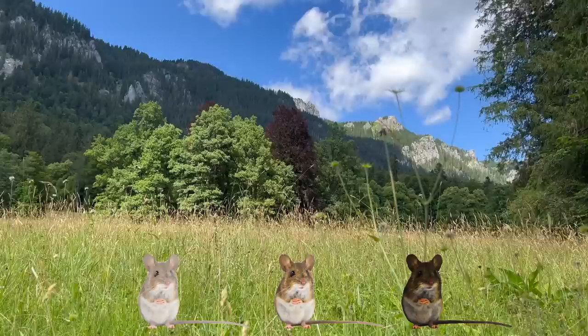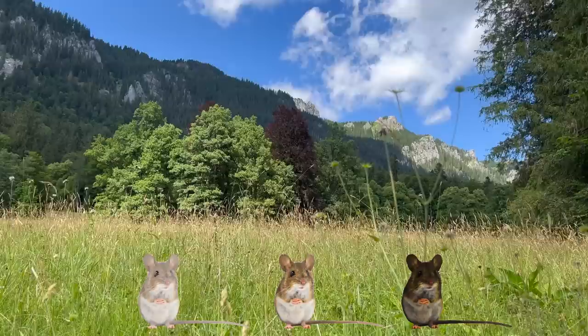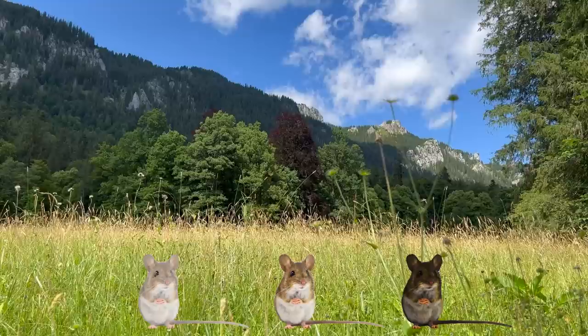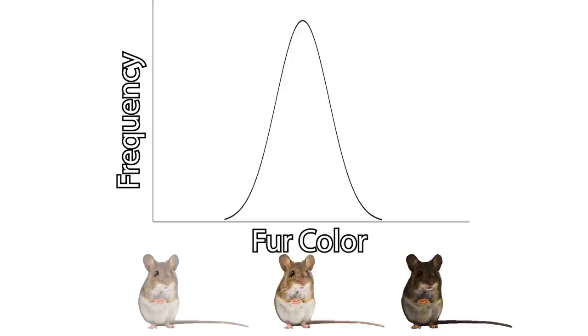Now let's hit the reset button and put our mice out in an open, grassy field. Now the light brown mice are going to blend into the grass quite nicely, whereas the super light and the super dark mice will be easy to spot. In this case, we can expect to see our graph get taller and skinnier, as more and more mice are born with medium coats, and both extremes die off. We call this stabilizing selection.